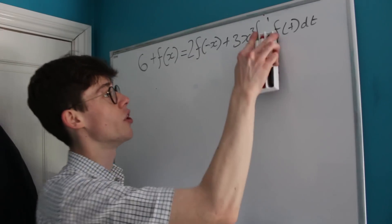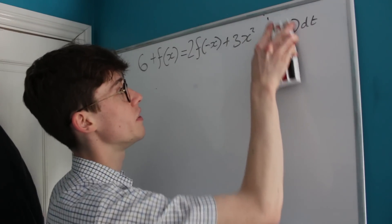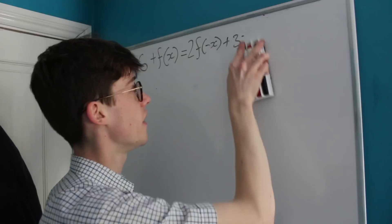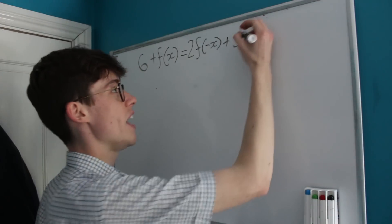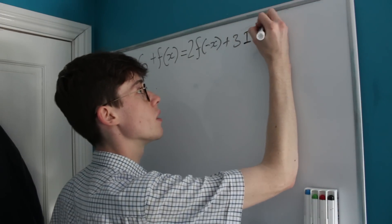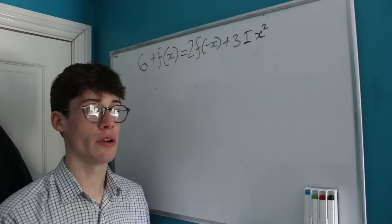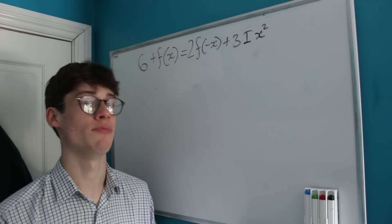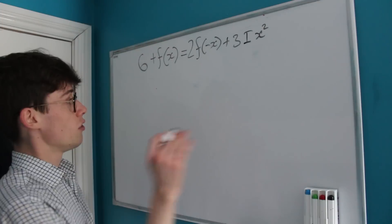The value of the integral from -1 to 1 of f(u)du will be equal to the integral from -1 to 1 of f(x)dx.